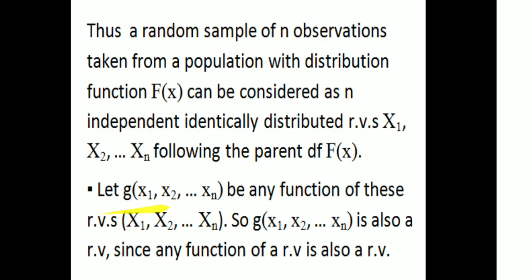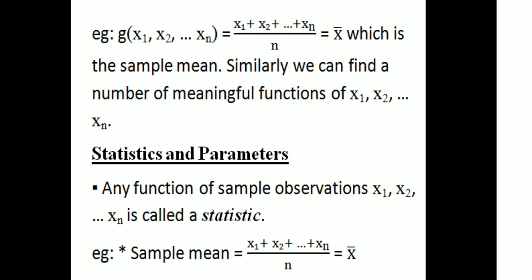Let g(X1, X2, ..., Xn) be a function of the random variables X1, X2, ..., Xn. We can find a sample meaning — that is, the sample variable function. As an example, we choose the sample variable function, which is the sample mean of the random variable. Similarly, we can find a number of meaningful functions of X1, X2, ..., Xn.